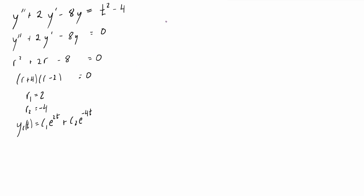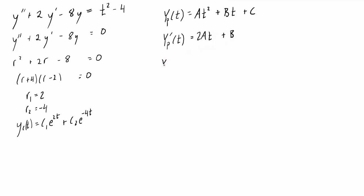Now that we have the complementary solution, we'll go after a particular solution using the method of undetermined coefficients. Because we have an nth degree polynomial on the right hand side, we assume the particular solution is also an nth degree polynomial. So we assume y_p(t) = At² + Bt + C, where A, B, and C are undetermined coefficients. The first derivative is y_p′(t) = 2At + B, and the second derivative is y_p″(t) = 2A.